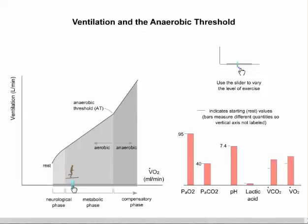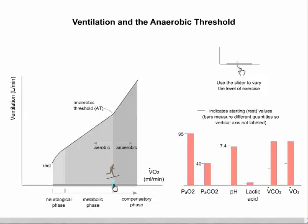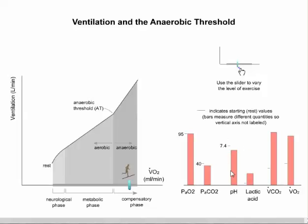If the guy starts exercising more intensely and heavier, you can look over here on the right and see those values continue to increase. The carbon dioxide is starting to catch up with the oxygen, and then right here when we hit the anaerobic threshold, they are equal. As soon as we cross over that threshold, the carbon dioxide inches above the oxygen, the lactic acid levels start to increase, and the pH starts to decrease, putting that body in an acidic state.